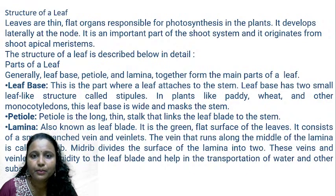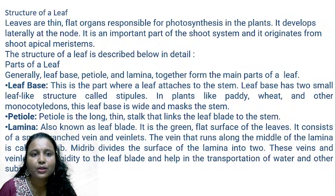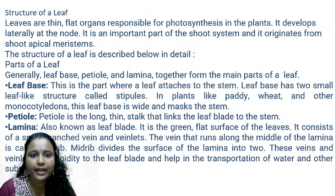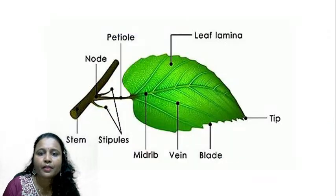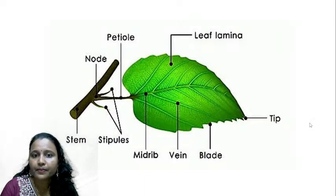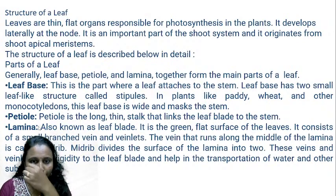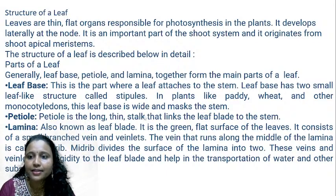The parts of the leaf — leaf base, petiole, and lamina — together form the main parts of the leaf. The leaf base is the part where the leaf is attached to the stem. The leaf base has two small leaf-like structures called stipules. The petiole is a long, thin stalk that links the leaf blade to the stem. The lamina, also known as the leaf blade, is the green flat surface of the leaf, and it consists of small veins and veinlets.